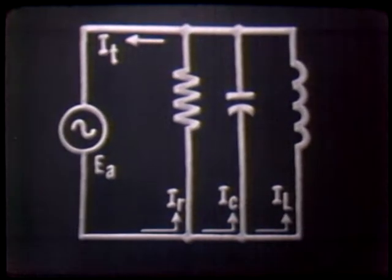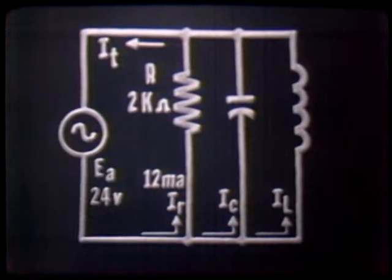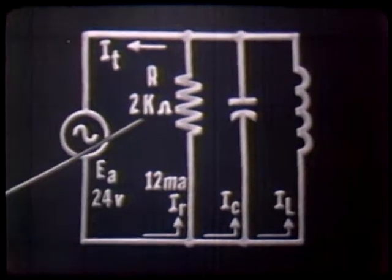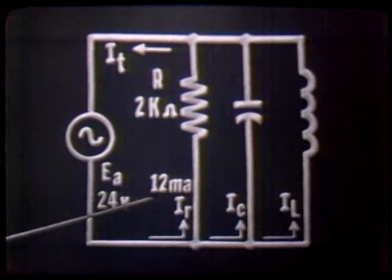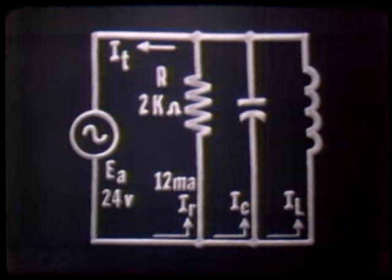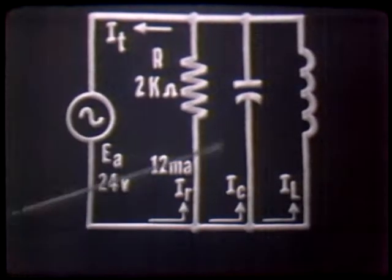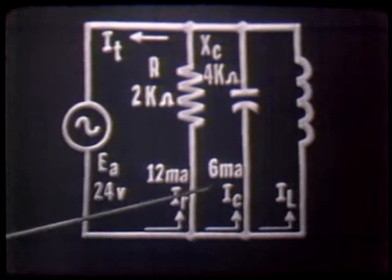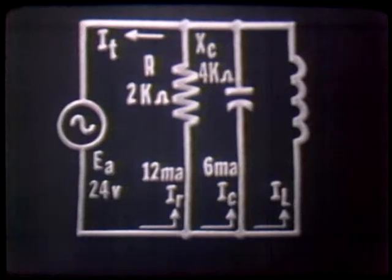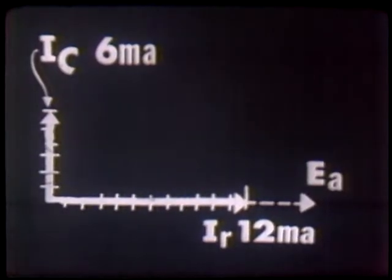Solving for branch currents by applying Ohm's law and plotting the current vectors: suppose we assume our resistor is 2k ohms with an applied voltage of 24 volts. Using Ohm's law, the current comes out to be 12 milliamps. We would plot this on a vector where IR equals 12 milliamps at 0 degrees, in phase with the applied voltage EA. Next, IC, our capacitive current: assuming a capacitive reactance of 4k ohms with 24 volts applied across the capacitor, we have a capacitive current of 6 milliamps. IC leads IR by 90 degrees and is 6 units long.